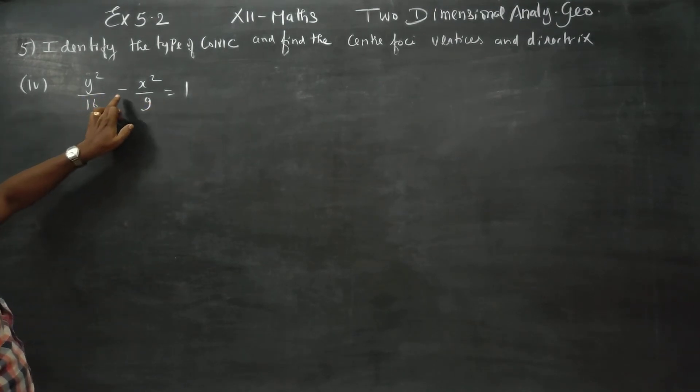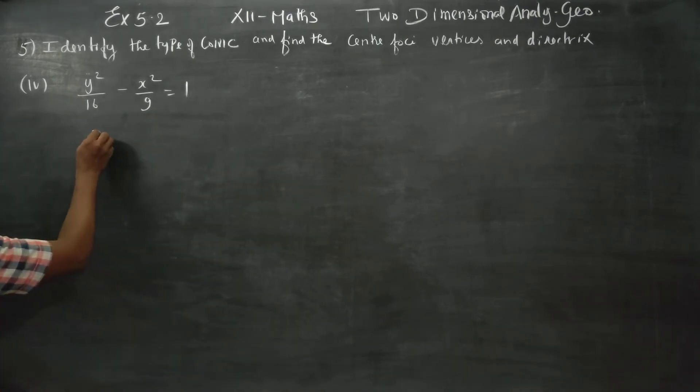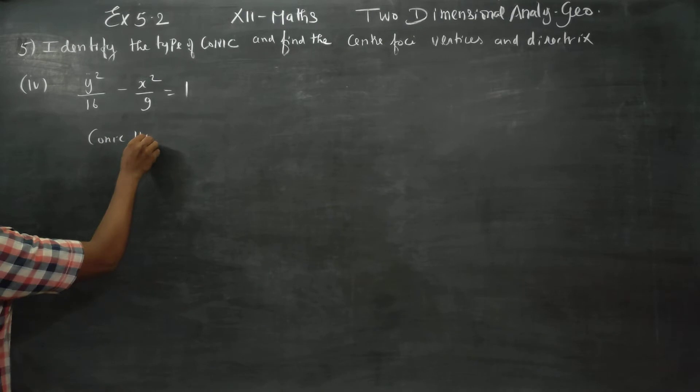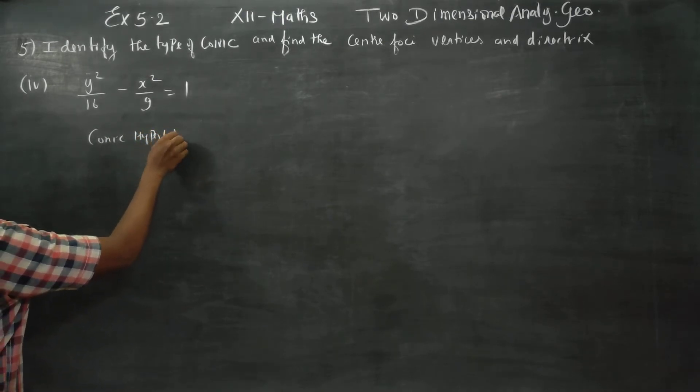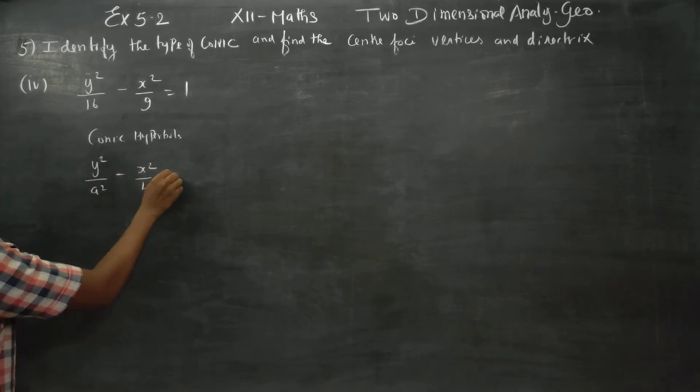Y square by 16 minus X square by 9 is equal to 1. It is a hyperbola. Therefore my conic is a hyperbola. Then it matches with the formula Y square by A square minus X square by B square is equal to 1.